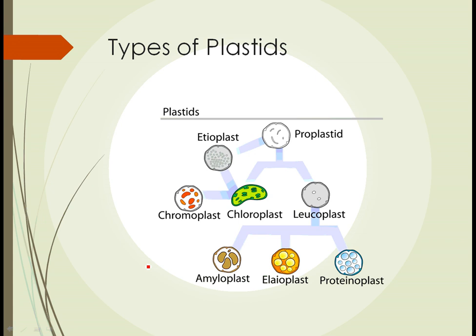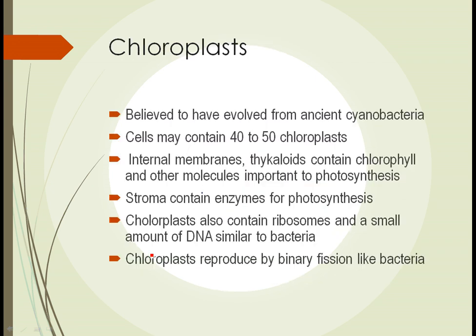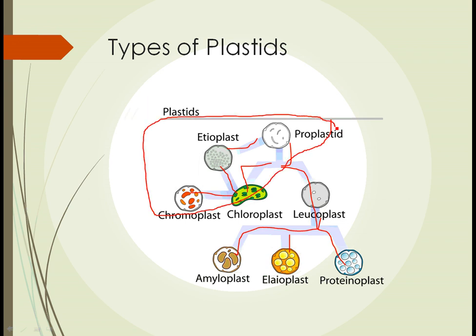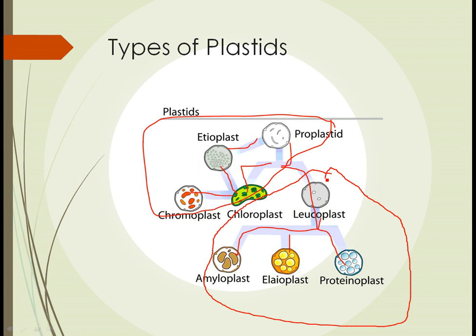This diagram shows types of plastids connected by faint lines. At the top we have a proplastid and etioplast, connected to the chloroplast and chromoplast. There is a separate pathway leading down to other types of plastids. The upper group is primarily the sites of manufacture of materials, while the lower group is primarily the sites of storage of materials. Each one can have some function of the other, but those are their primary roles.